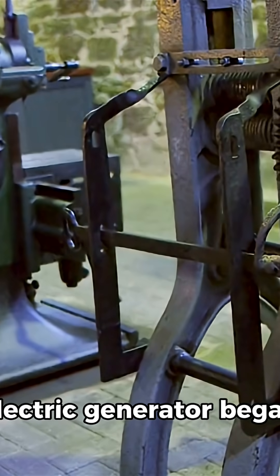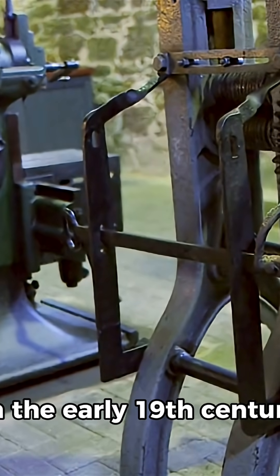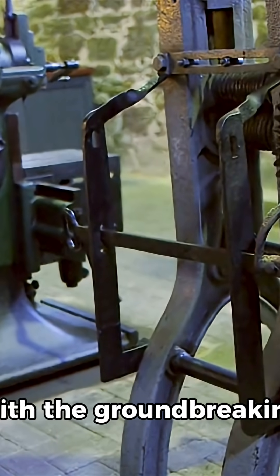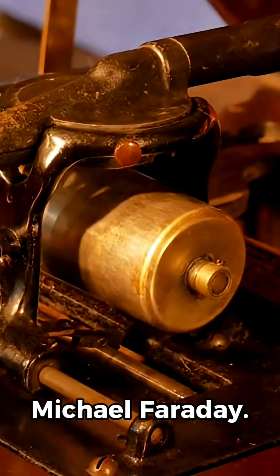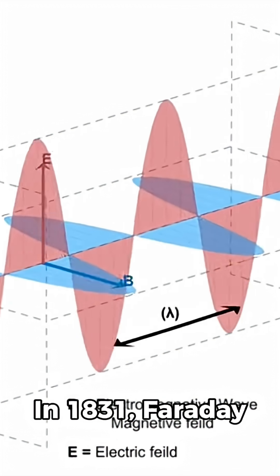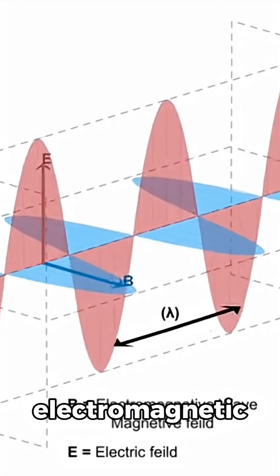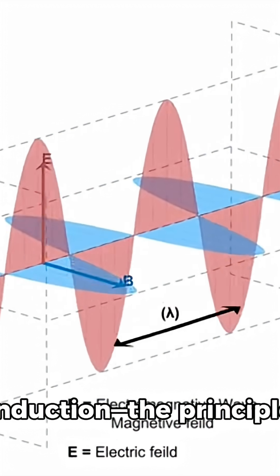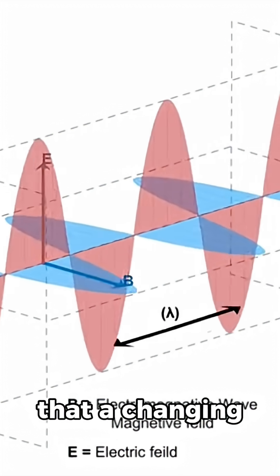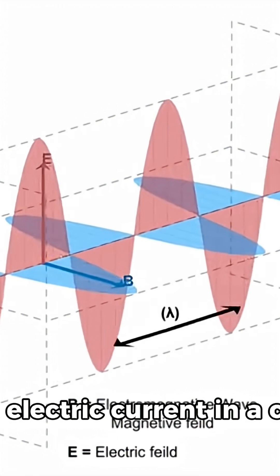The history of the modern electric generator began in the early 19th century with the groundbreaking work of English physicist Michael Faraday. In 1831, Faraday discovered electromagnetic induction, the principle that a changing magnetic field can induce an electric current in a conductor.